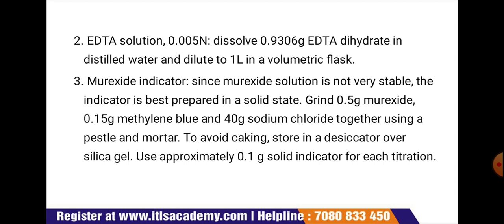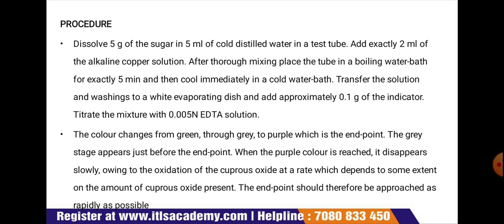Grind 0.5 grams of muroxide and 0.15 grams of methylene blue and 40 grams of sodium chloride together using a pestle and mortar. To avoid degradation, store in a desiccator over silica gel. Use approximately 0.1 gram of solid indicator for each titration.